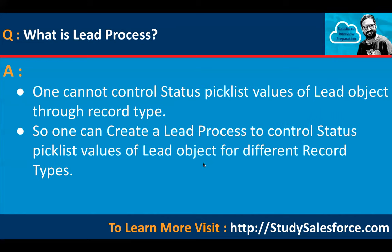What is lead process? One cannot control the status picklist value of the Lead object through record type alone. One can create a lead process to control the status picklist values of the Lead object for different record types.